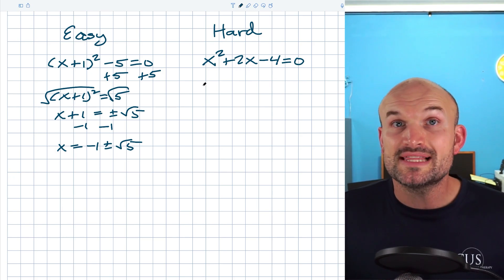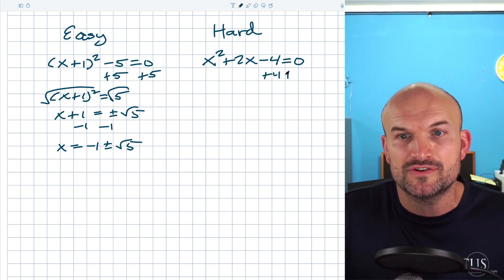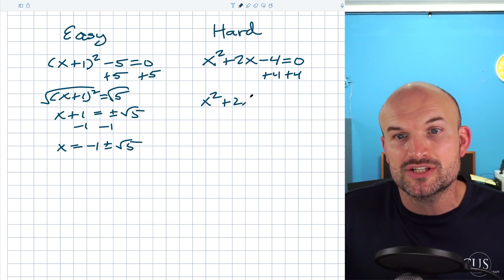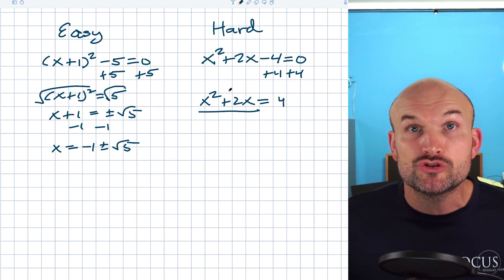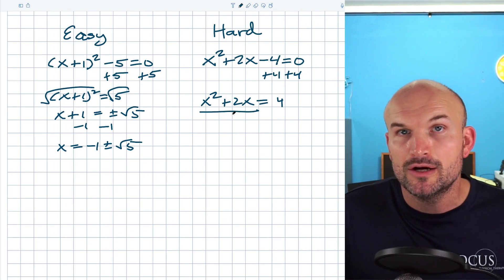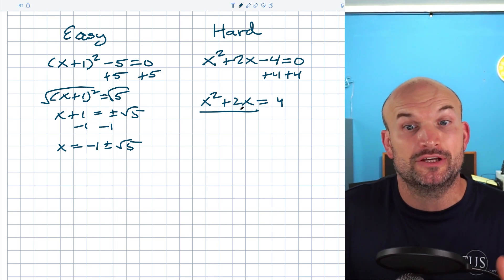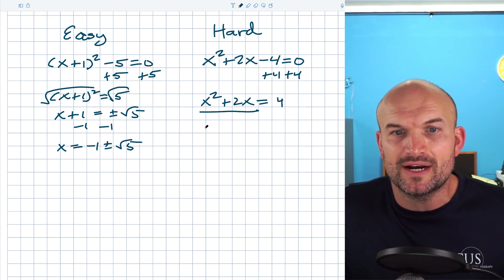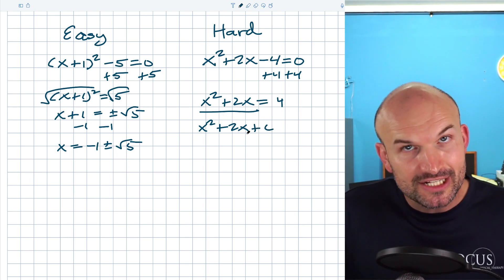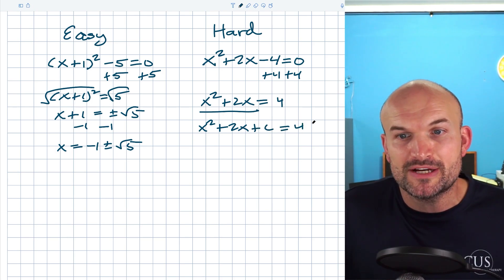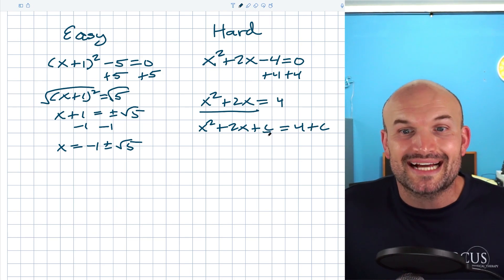What we want to do is create a perfect square trinomial, because this is not a perfect square trinomial. The first thing I recommend is to add four to the other side, leaving us with x² + 2x = 4. Now this is the expression I want to create my perfect square trinomial on. I'll use a value c — add c to the left and also add c to the right hand side.